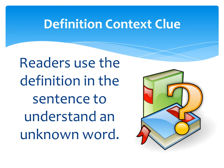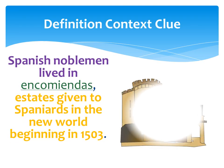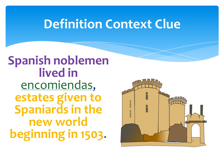With a definition context clue, readers use the definitions in the sentence to understand an unknown word. By eliminating this roadblock, an author ensures a reader can delve more deeply into a text. An example for this type of context clue is more historical in nature: Spanish noblemen lived in encomiendas, estates given to Spaniards in the New World beginning in 1503. The author recognized readers may stumble over the word encomiendas, therefore he or she provided the definition.